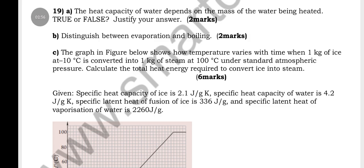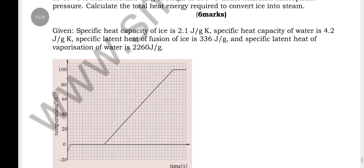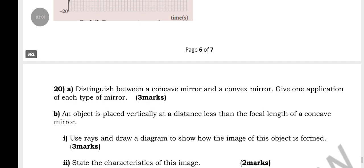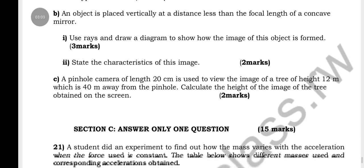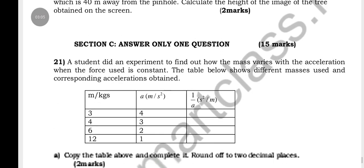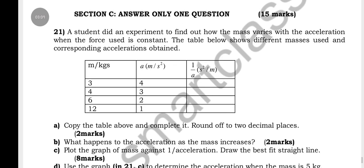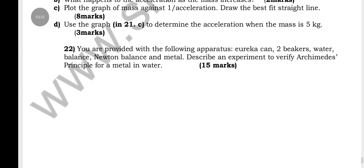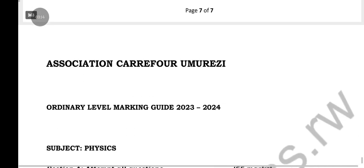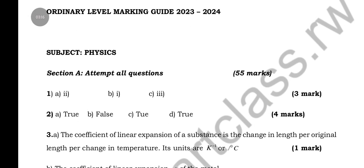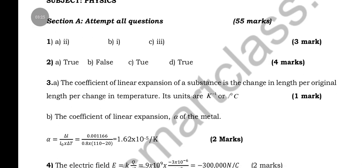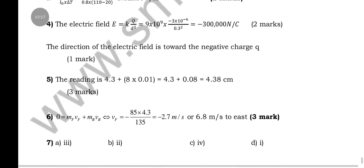Here is number 19, with a graph shown below, and here is number 20. In Section C, you have to do only one question. Here is number 22. Now, here is the marking guide starting from Section A — I wish you can see how the questions are being asked and their respective answers.